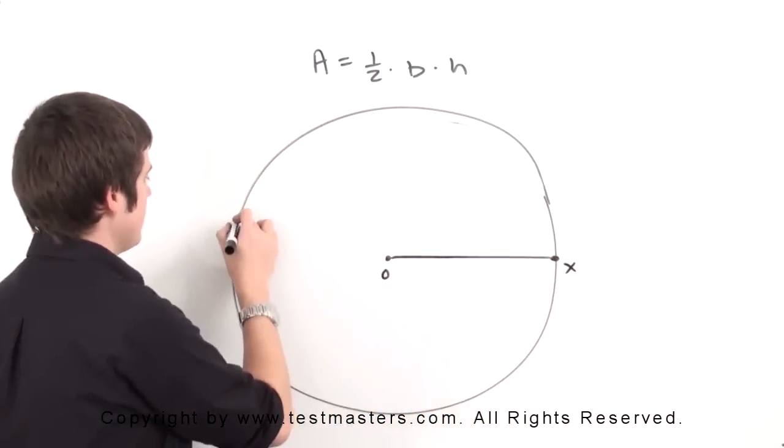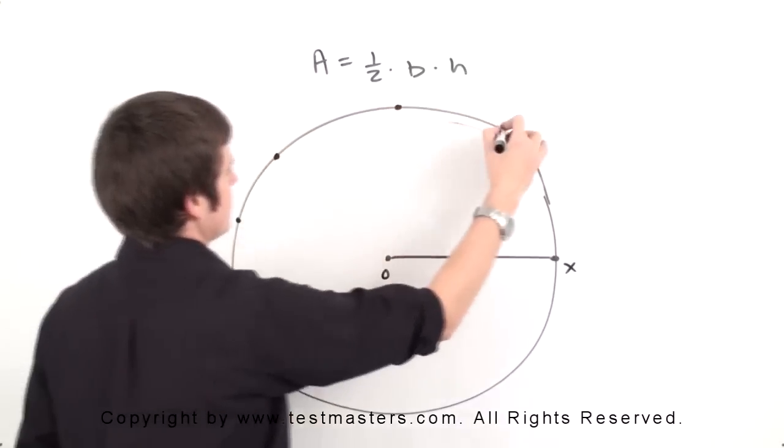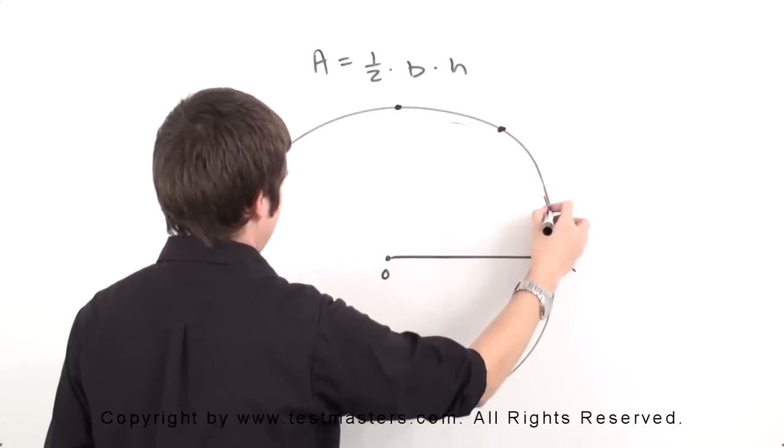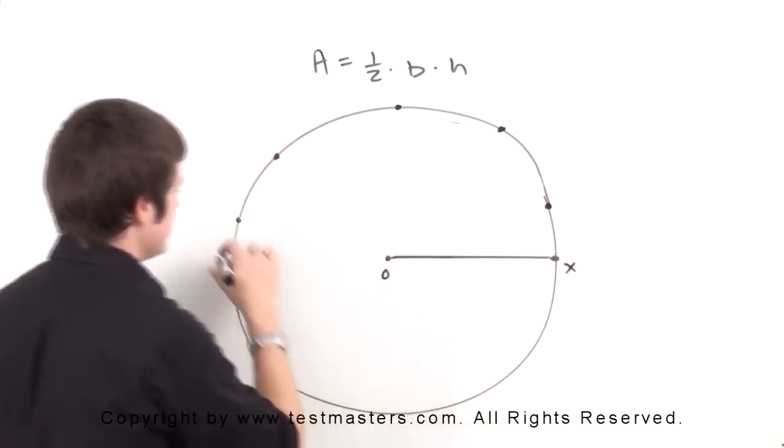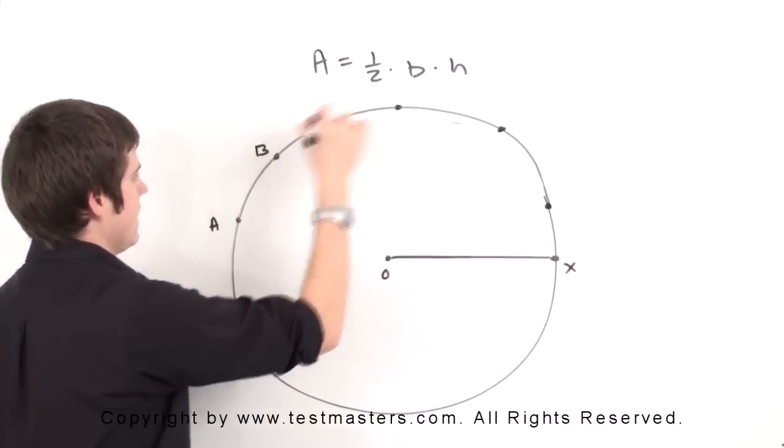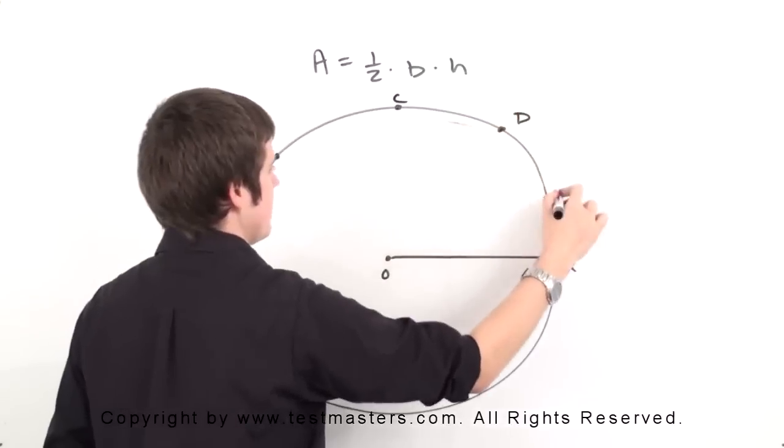It is asking us to find which triangle has the smallest area, and we have these segments and points listed A, B, C, D, and E.